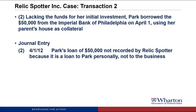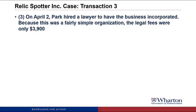This is the only time this trick will appear. In the rest of the case, when I talk about Rebecca Park doing things, she's doing them on behalf of the company. Since there's no journal entry, there's nothing to post to T-accounts. So we go right on to transaction number three: on April 2nd, Park hired a lawyer to have the business incorporated. Because this was a fairly simple organization, the legal fees were only $3,900.